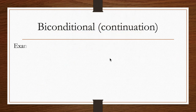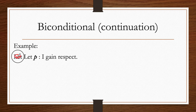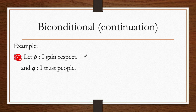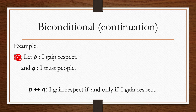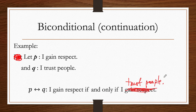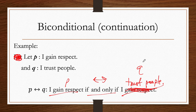Another example: let P be 'I gain respect' and Q be 'I trust people.' Written as a biconditional: 'I gain respect if and only if I trust people.' Let P be true and Q be true. Since they're both true, the biconditional itself is true by its definition — following row 1 of the table.